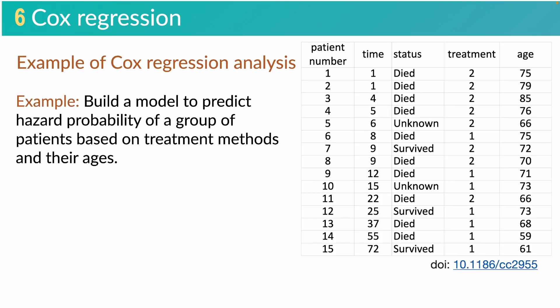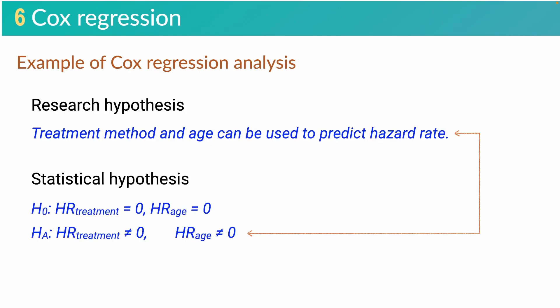To have a better understanding of Cox regression, we will look at it through an example. The example is to build a model to predict the hazard rate of a group of patients based on treatment and their age. The research hypothesis is that treatment method and age can be used to predict the hazard rate for the patient group. To test this hypothesis, we test the null hypothesis where hazard rates for treatment method and patient age are equal to zero. The alternative hypothesis states that hazard rates for treatment method and patient age are different from zero, which corresponds to the research hypothesis.